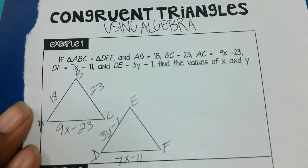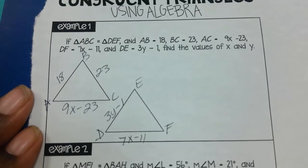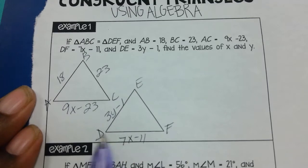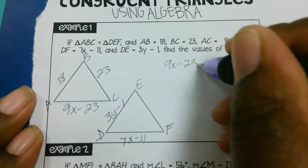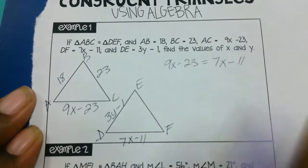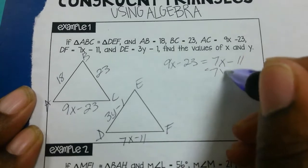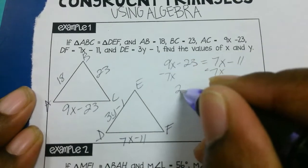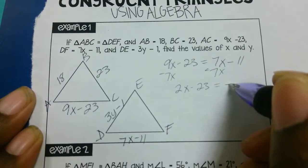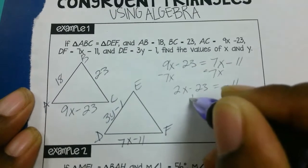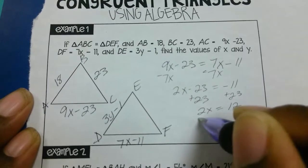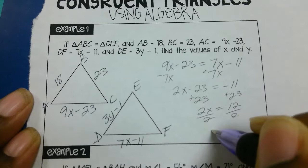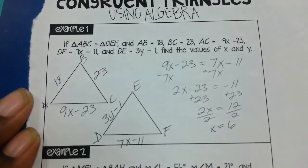Well, I need to solve for x, so I'm going to need to use the sides that have x in it. So I can see AC has x in it and it corresponds to DF. So I'm going to use those two. I'm going to say 9x minus 23 equals 7x minus 11. Subtract 7x from both sides: 2x minus 23 equals negative 11. Add 23 to both sides: 2x equals 12. Divided by 2, x equals 6.